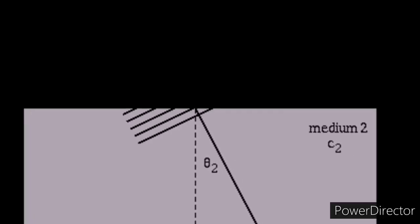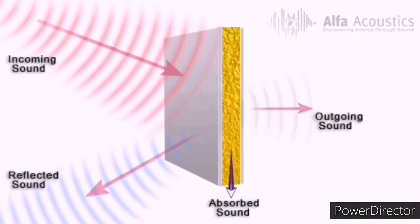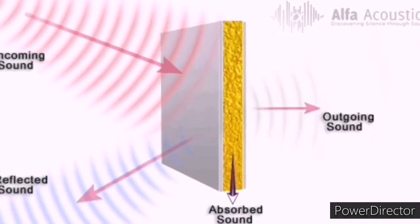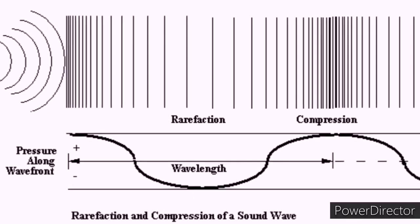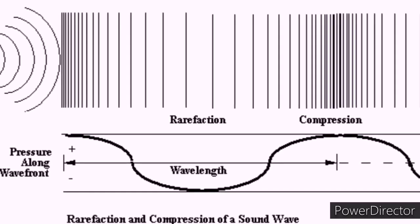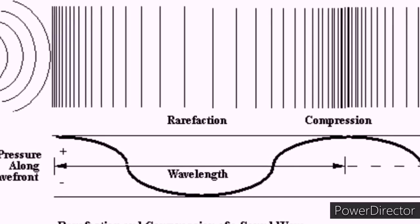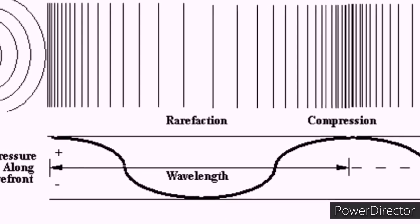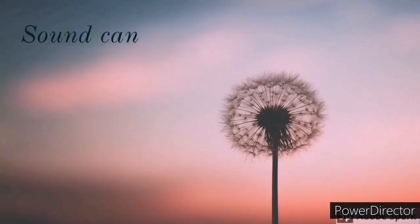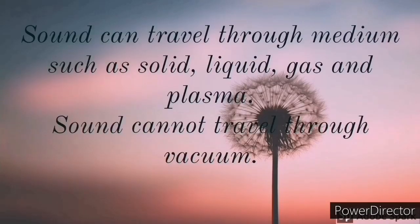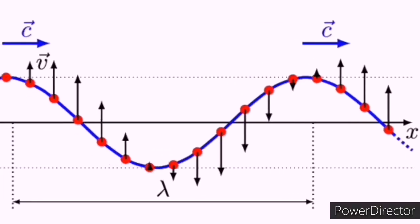During propagation, waves can be reflected, refracted or attenuated by the medium. The mechanical vibrations that can be interpreted as sound can travel through all forms of matter: gases, liquids, solids and plasmas. The matter that supports the sound is called the medium. Sound cannot travel through a vacuum.